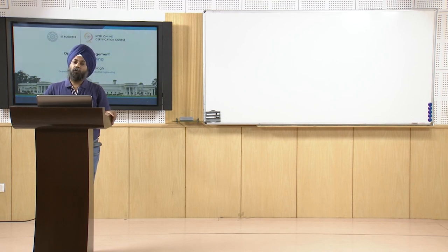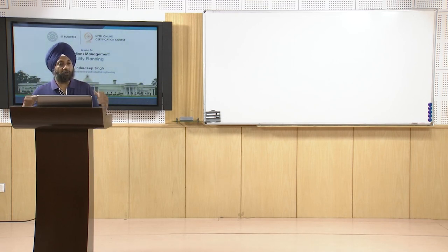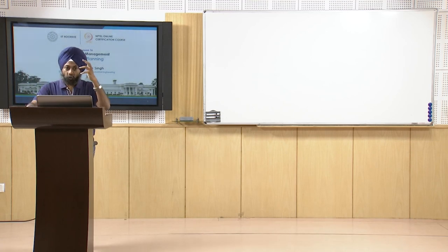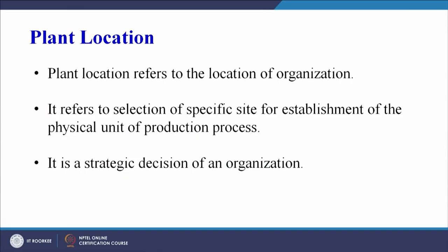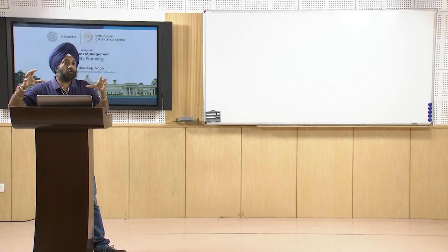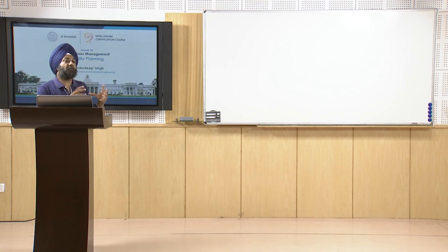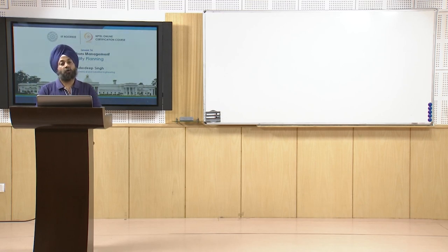Plant location refers to the address of an organization — the selection of a specific site for the establishment of the physical unit of production processes. We generally call it the address of the factory: where our production facility is going to be located.